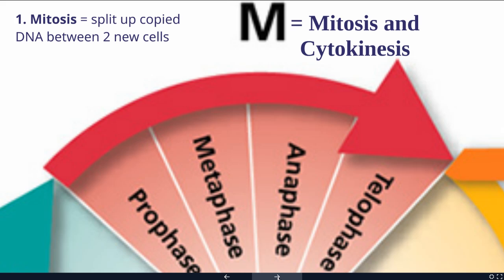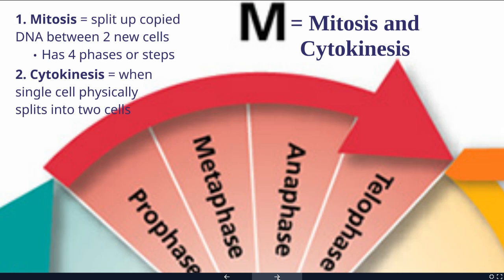Mitosis is when we split up copied DNA between two new cells. Mitosis has four phases: prophase, metaphase, anaphase, and telophase. We'll learn more about those details in a little bit. Cytokinesis is when a single cell physically splits into two cells — mitosis splits up the DNA, while cytokinesis splits one cell into two. Once you've finished cytokinesis, you have finished the life cycle of a single cell.